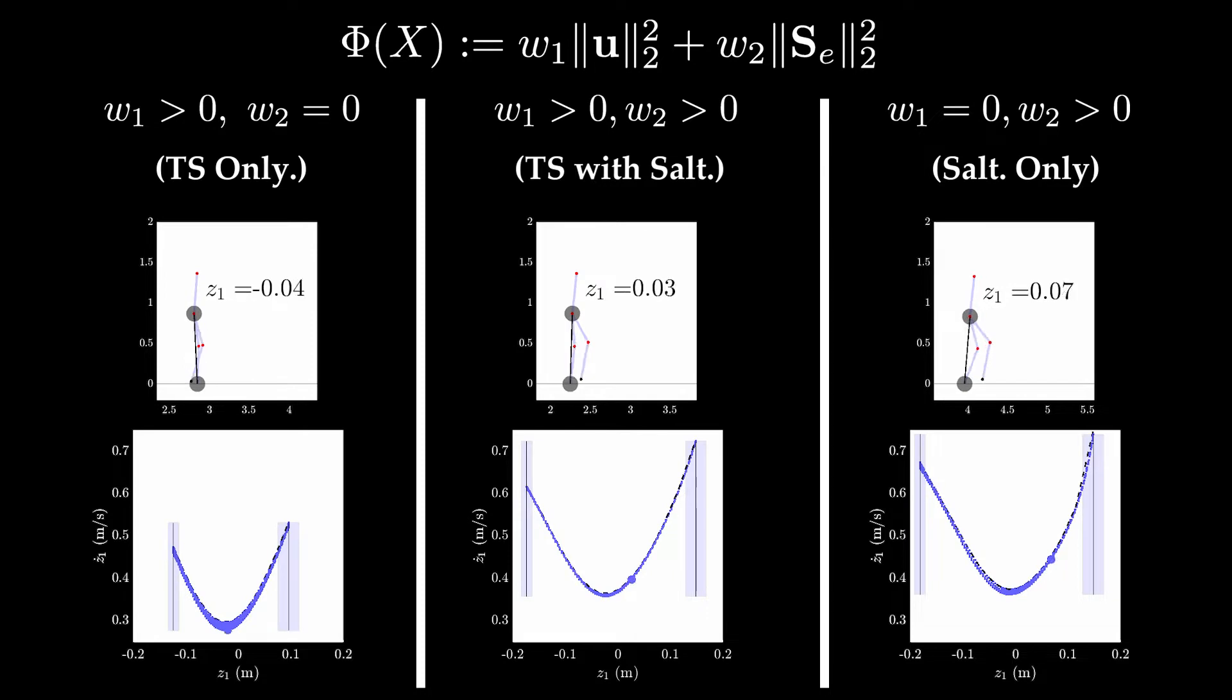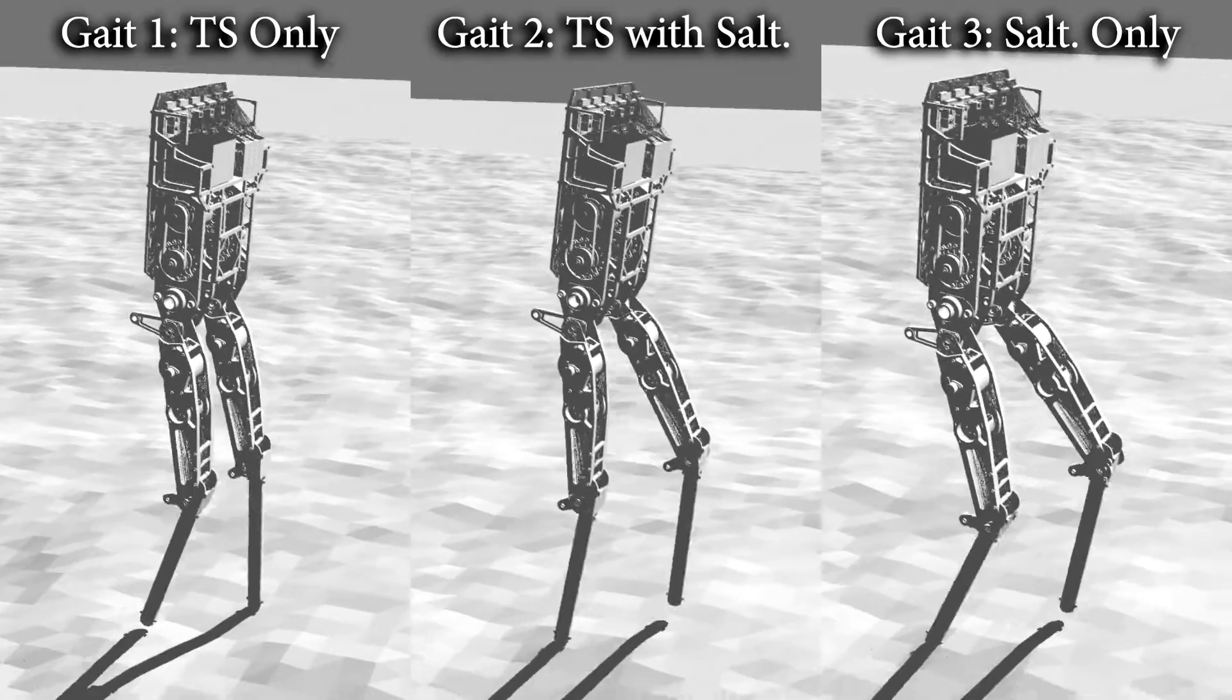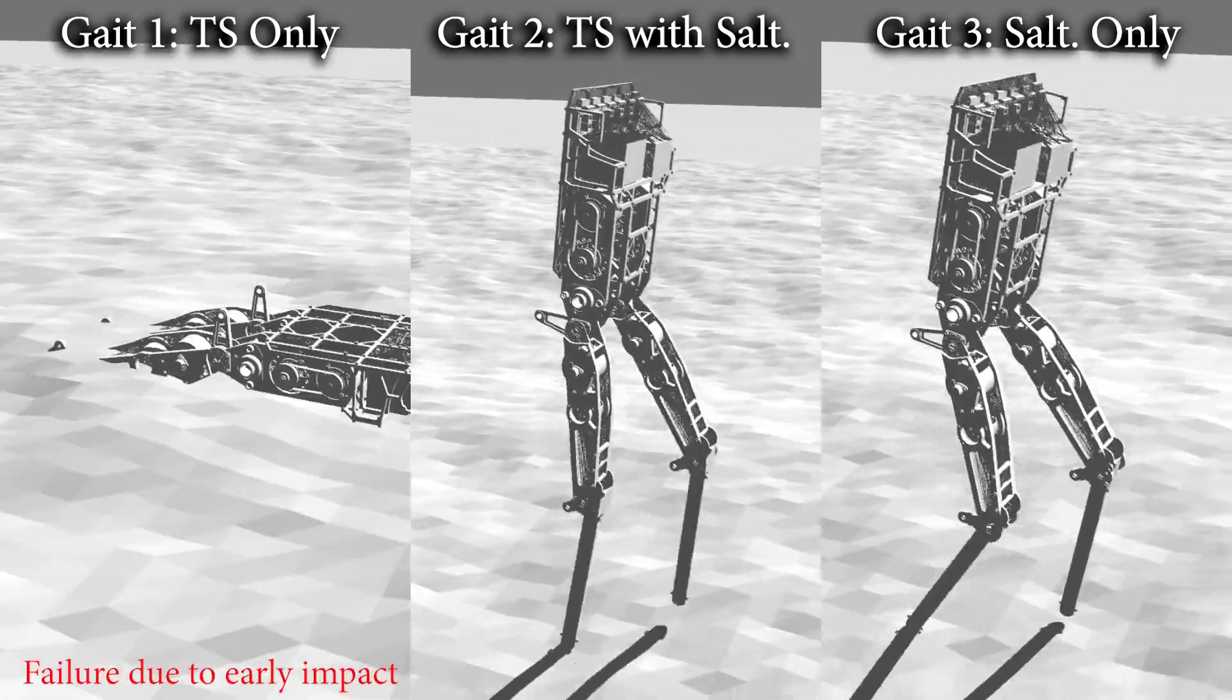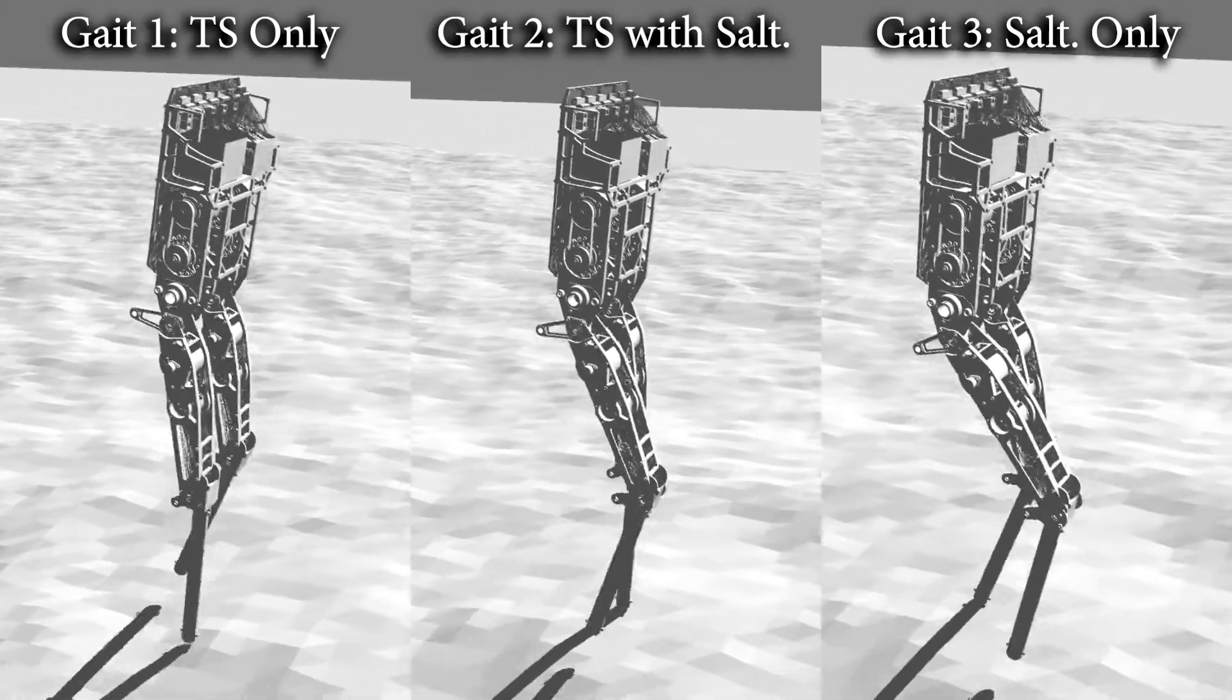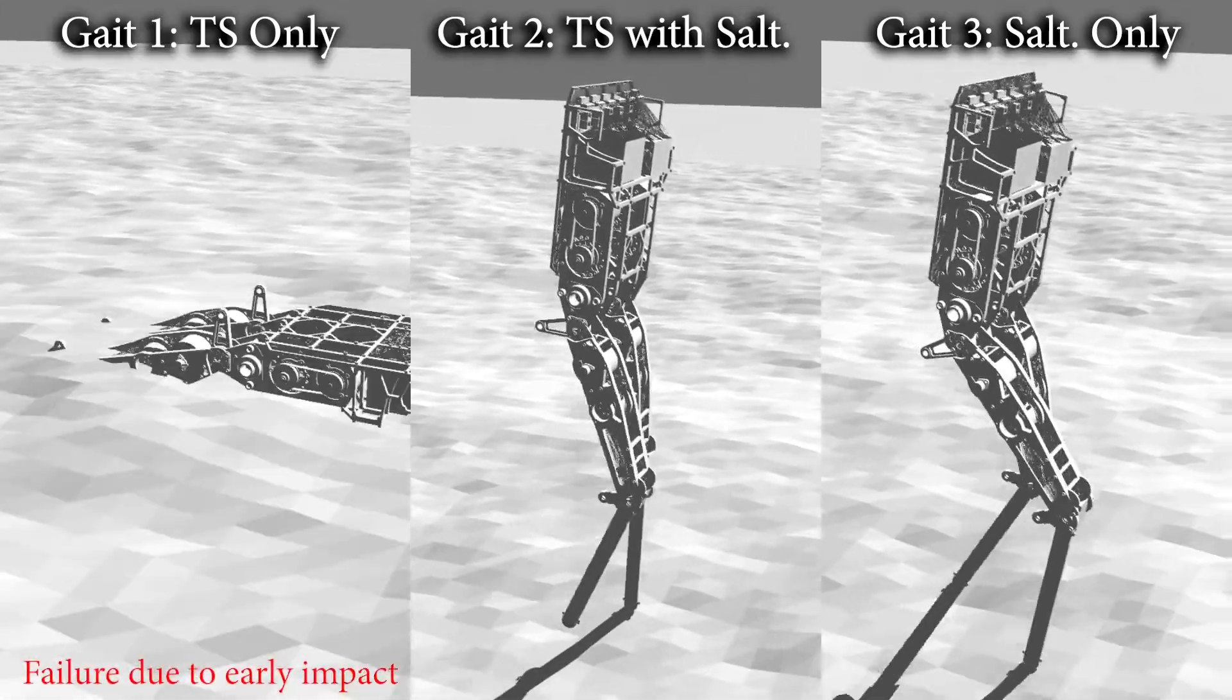All gaits are enforced via PD tracking without any additional regulators or stabilizers. First, we generate and compare these gaits in simulation on the AMBER 3M planar biped over rough terrain. As shown, the gaits generated with the saltation matrix are robust, while the torque squared only gait fails.